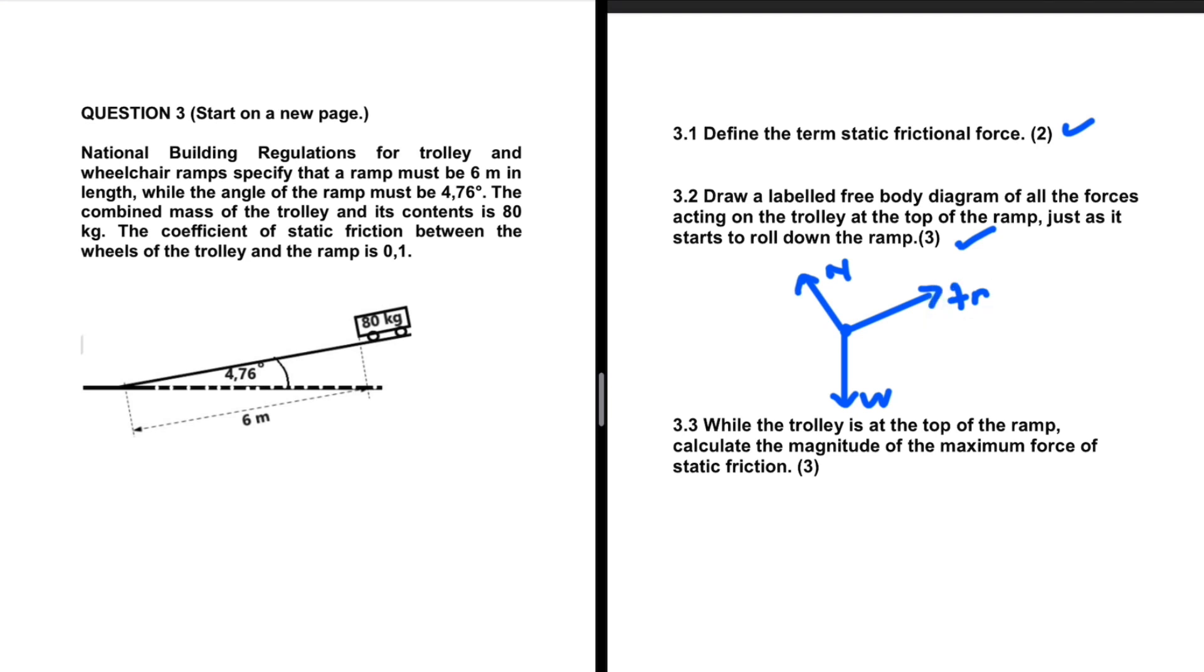The normal force is perpendicular to the surface, so it plays no role on the parallel motion of the object relative to the surface. What plays a role is the weight. We can resolve the weight into its parallel component and its perpendicular component. By looking at this, you can see clearly that the weight parallel is down the incline.